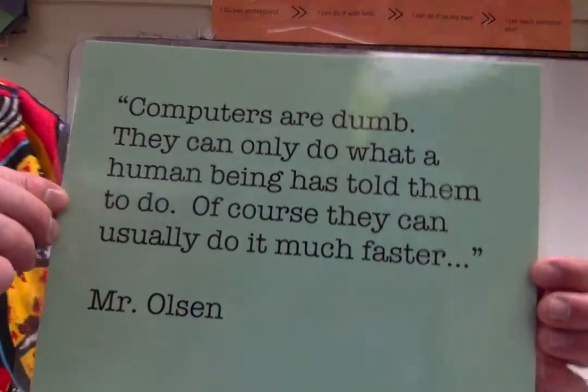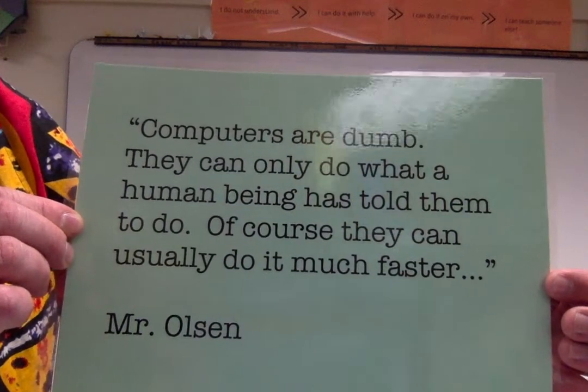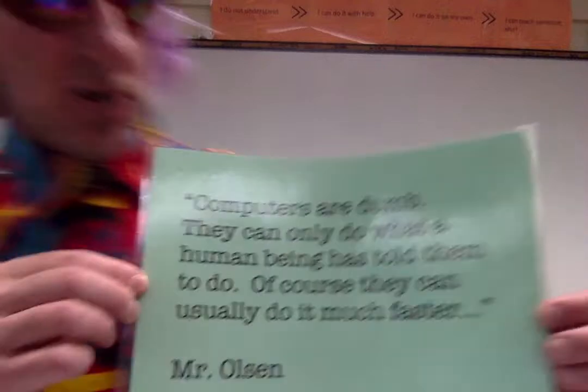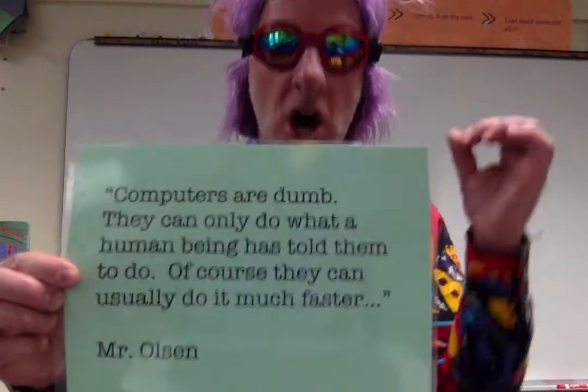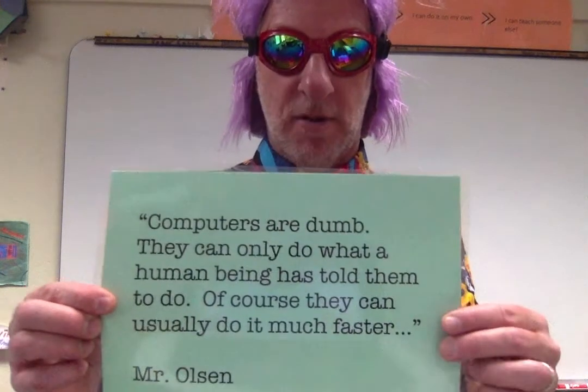Hey everybody, here we go. I don't even know what online week this is. Who cares anymore? But it's time for our quote of the week. Mr. Olsen once said, Computers are dumb. They can only do what a human being has told them to do. Of course, they can usually do it much faster. But it's all based on the intelligence of the human in the first place, everybody.